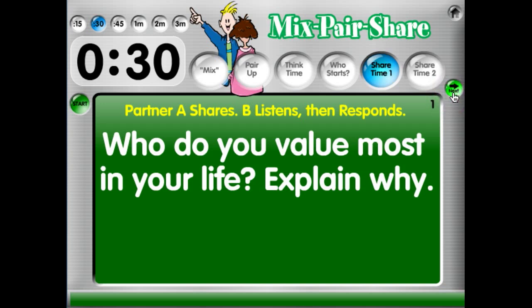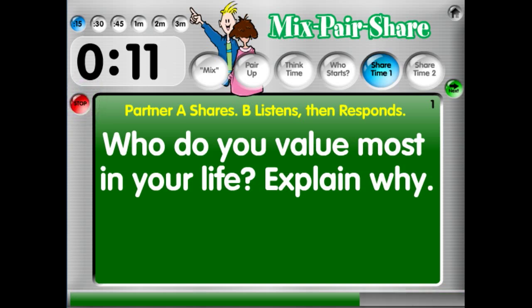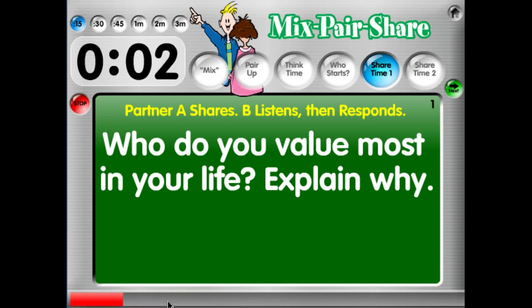We want to give Partner A a certain amount of time to share. Here are the available options: 15 seconds, 30 seconds, 45 seconds, all the way up to 3 minutes. Let's give them a quick 15 seconds. Go ahead and start the timer — this will count down. Notice the little progress bar at the bottom; as time gets close to being done, it goes from green to yellow to red.